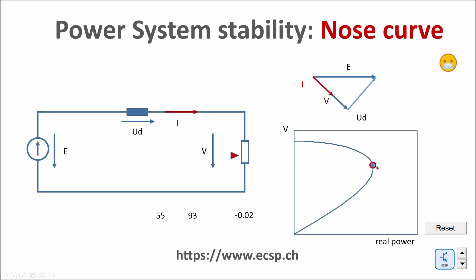Here I am now on the no return point. This is the point where I will lose stability because I can evacuate less electrical power than I feed mechanical power into the generation.